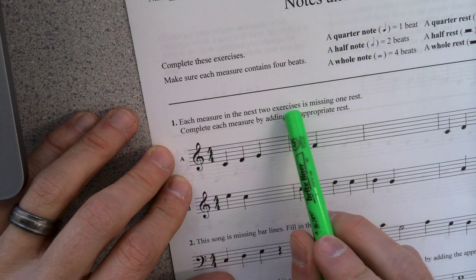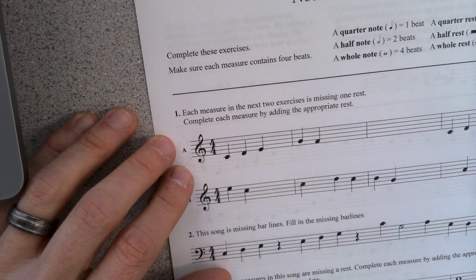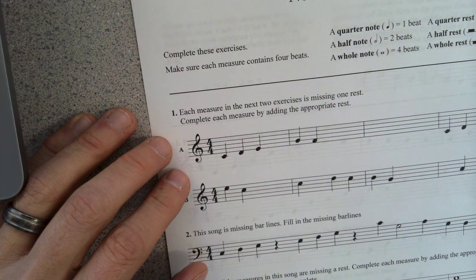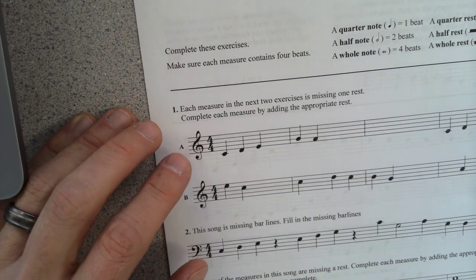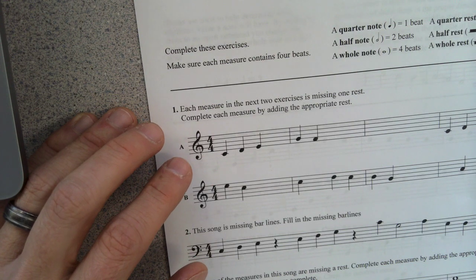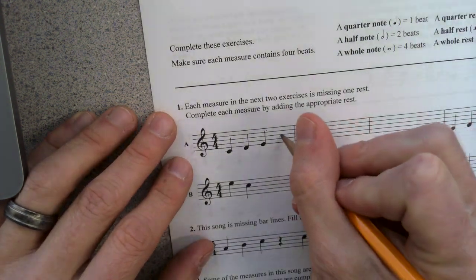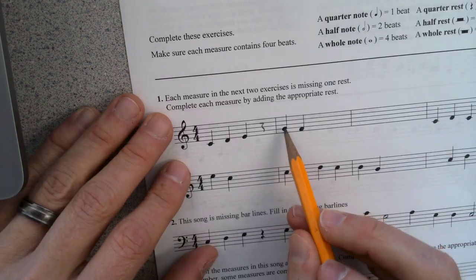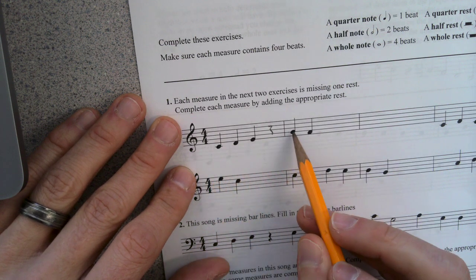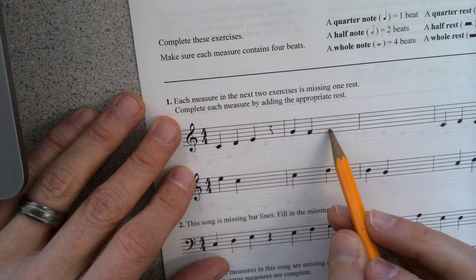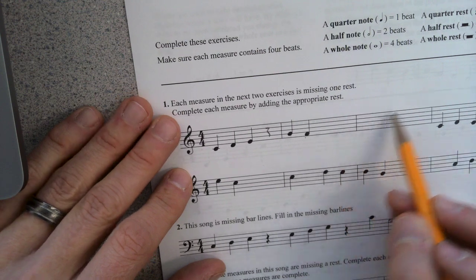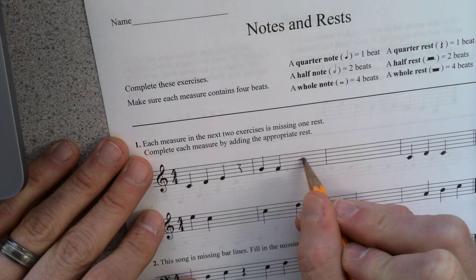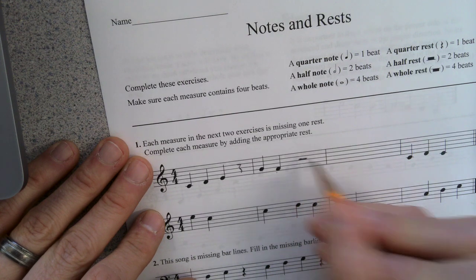But it says you've got to add the missing rest. So you're going to add only the rest to this one. Let's get a pen. Actually, let's do it right. Let's use a pencil. So I'm going to rest right here. Next measure. I need four quarter notes. I have one, two. I've got two of them. I need two more. I need two beats.